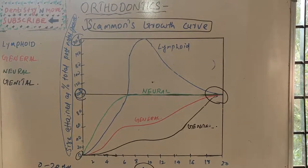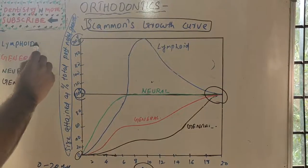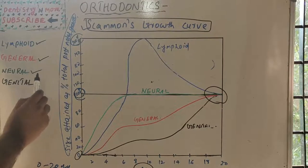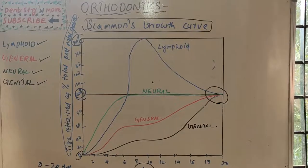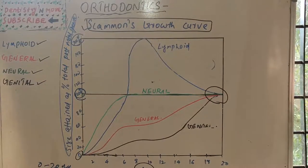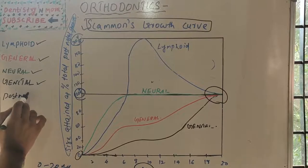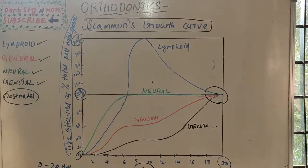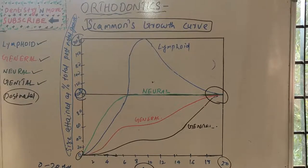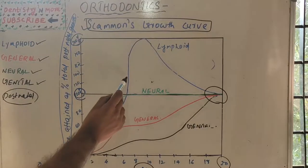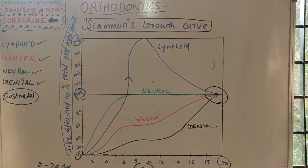There are four body tissues represented: lymphoid tissue, general or somatic tissues, neural tissues, and genital tissues. We are going to study Scammon's growth curve — the growth of these tissues over the postnatal period of 20 years. The lymphoid curve, shown in blue, includes the thymus, pharyngeal and tonsillar adenoids, lymph nodes, and intestinal lymphatic masses.